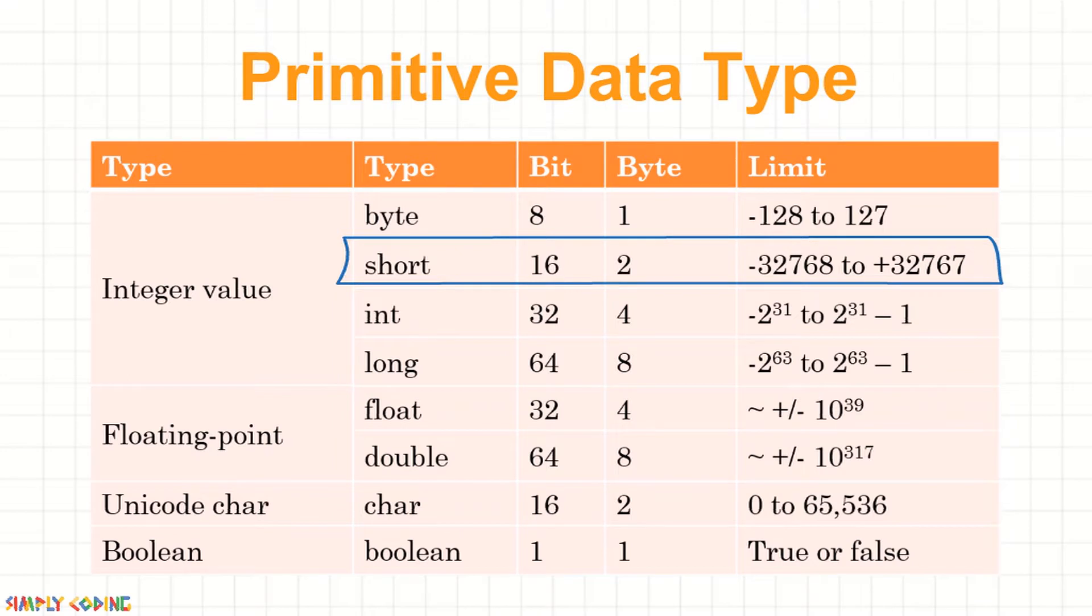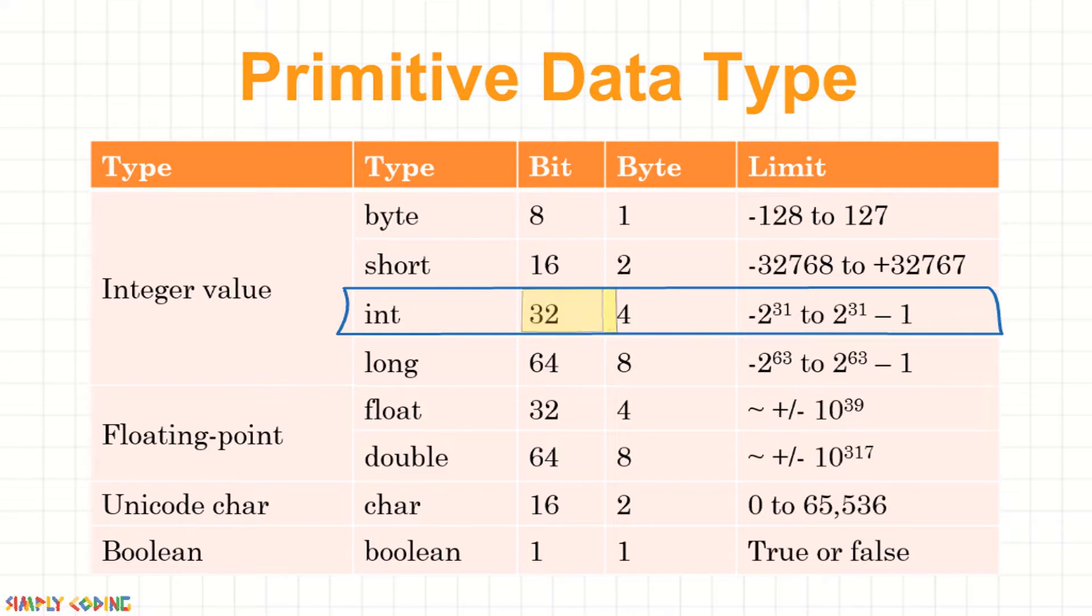Similarly, short has 16 bits or 2 bytes of space and can take values from minus 32768 to positive 32767. int has 32 bits or 4 bytes and can take numbers from minus 2 raised to power 31 to 2 raised to power 31 minus 1.